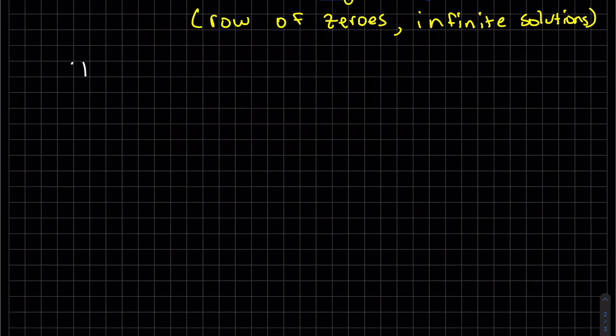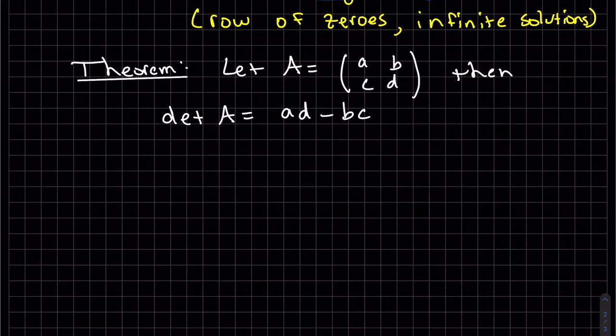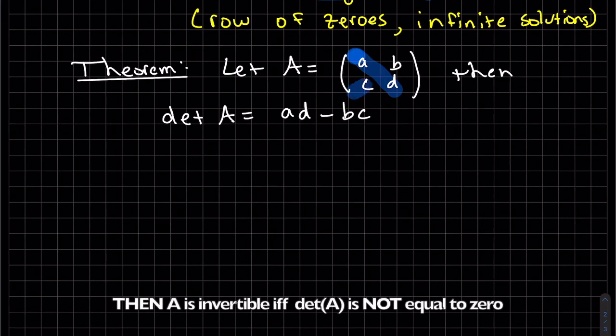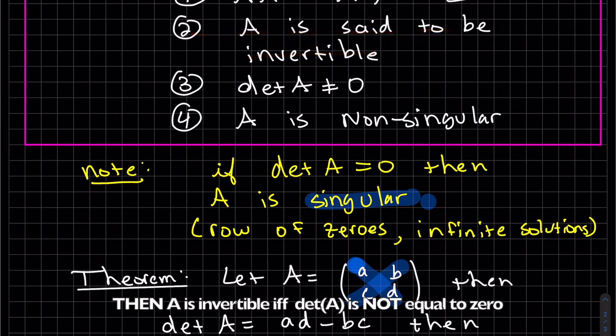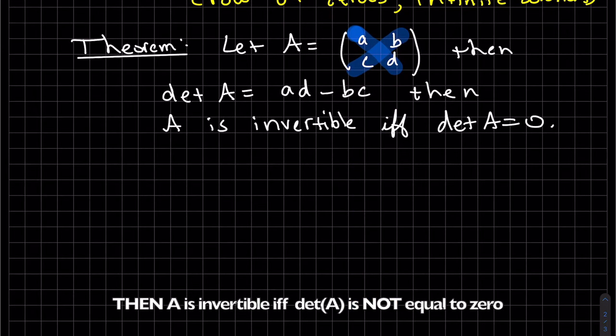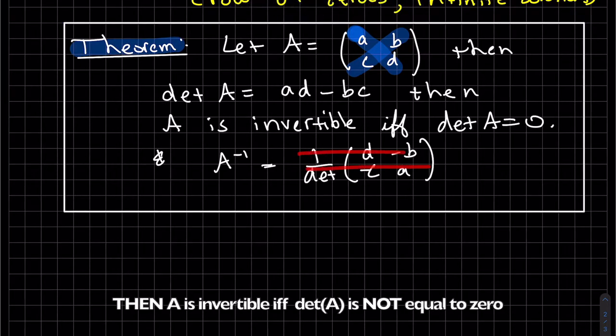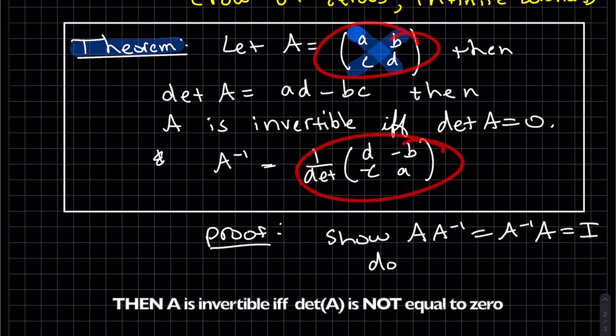Here's our first theorem. So we saw a peek of this in the last video. The determinant of A is AD - you start with A to the diagonals minus BC. So we kind of mentioned this in the previous notes. If A inverse exists, then the determinant is not equal to zero. But this is more specifically about a two by two, and we have a formula for A inverse. I will tell you though, I don't suggest you memorize this formula for the inverse. I'm going to show you a different way how to find it. We're just going to show A times A inverse equals A inverse A, which is I. And I'm going to let you do it for homework.